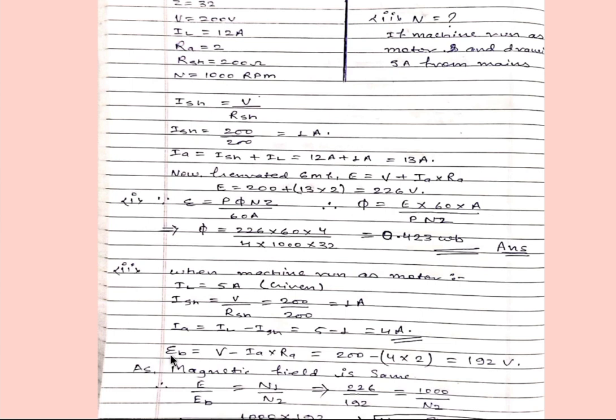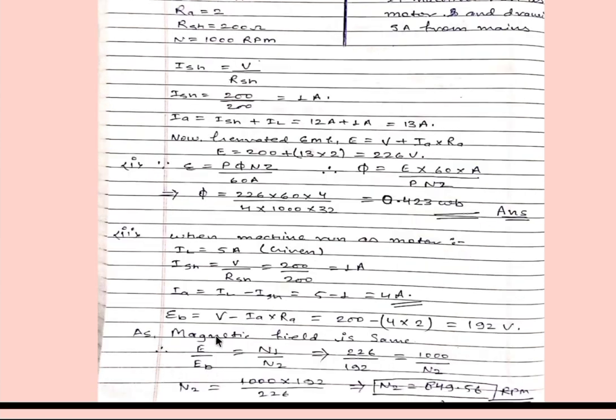Then we will calculate back EMF. Back EMF EB equals V minus IA into RA. From here we will get back EMF equals 192 volt. As magnetic field is same, so we know E by EB equals N1 by N2. We will put the value of N1, EB, and E and we will simply get N2. So N2 is 849.56 rpm, you can write 850 rpm also.